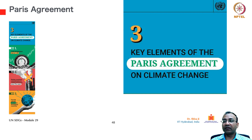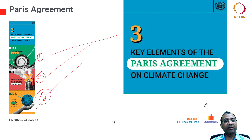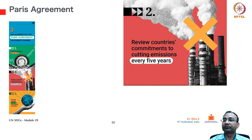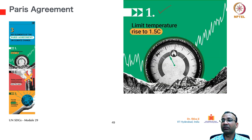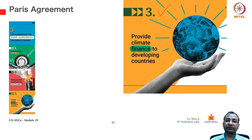The three major key elements of the Paris Agreement on climate change are: first, limit temperature rise to 1.5 degrees Celsius; second, review countries' commitments to cutting emissions every 5 years; and third, provide climate finance to developing countries. The first talks about limiting the temperature and controlling emissions, and the third is about financing.